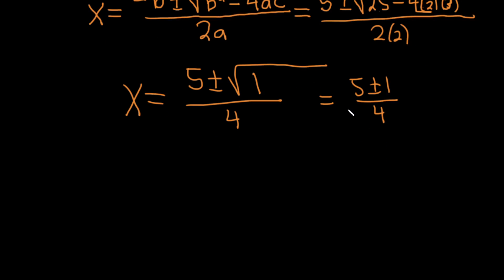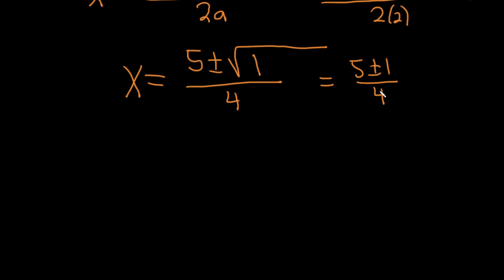So now we can break it up because we can actually compute these different cases. We can figure out a simplified version of the number, so let's do that. Let's take the plus case first. So x = (5 + 1) / 4 = 6/4 = 3/2. So x = 3/2, that's going to be one of our answers.